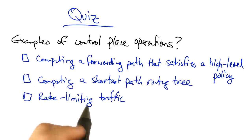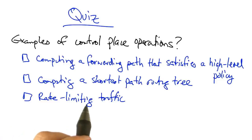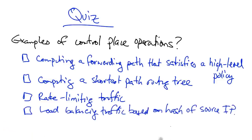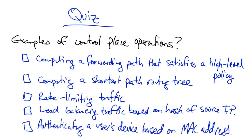Rate limiting traffic so that the overall sending rate doesn't exceed a certain throughput. Load balancing traffic based on a hash of the packet source IP address. Or authenticating a user's device based on its MAC address. Please check all options that apply.